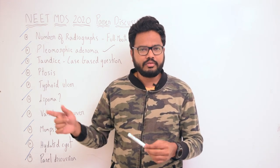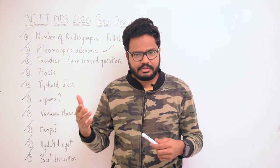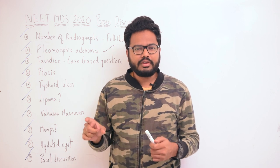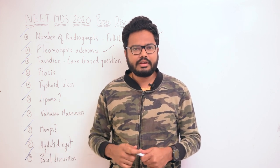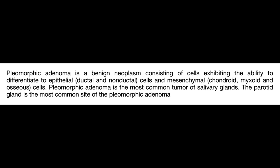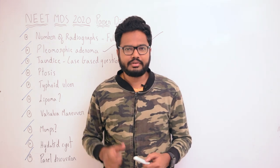Moving on to pleomorphic adenoma — there seems to be a question on which salivary gland it is most commonly seen in. As you're all familiar, it is the parotid gland. Pleomorphic adenoma is a benign neoplasm consisting of cells exhibiting the ability to differentiate into epithelial and mesenchymal cells. It is the most common tumor of salivary glands, and the parotid gland is the most common site.